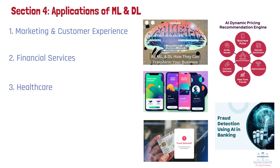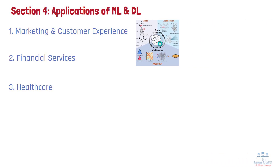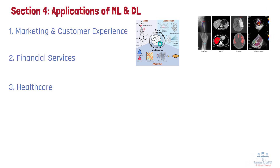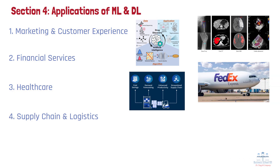Number 3: Healthcare. ML and DL improve diagnosis, treatment, and drug discovery. For example, DL algorithms analyze medical images to detect diseases like cancer with high accuracy, assisting doctors in making faster and more accurate diagnoses. Number 4: Supply Chain and Logistics. AI optimizes inventory management, route planning, and demand forecasting. For example, FedEx uses ML to predict package delivery times and optimize logistics, ensuring efficient operations and customer satisfaction.